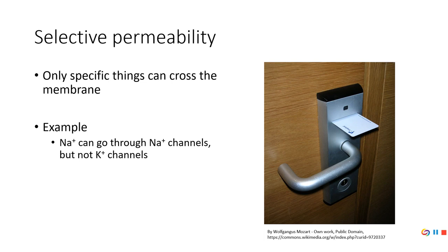It reminds me of a toy I used to have as a kid — a three-dimensional hexagon where each side had a different shape: a star, a square, a triangle. You put the blocks through to help with coordination for little kids. The star will only go through the star opening; it won't go through the triangle or rectangle. So you could say that toy has selective permeability — it only lets specific shapes through in specific places, not through every opening.